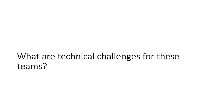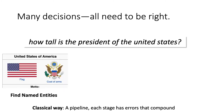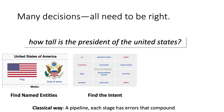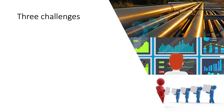Let's go from 30,000 feet down to about 10,000 feet to talk about the technical challenges these teams face. Here's an example: say you want to answer the question 'How tall is the president of the United States?' The classical way to build this is a pipeline — you first find named entities like 'United States' or 'president,' find the intent (the height intent), do some inference to determine you're talking about Trump the person not the office, and fire off the database query. You can make an error at each step, and the pipeline model causes errors to cascade.